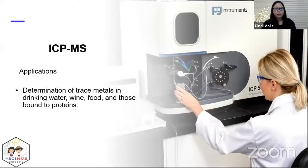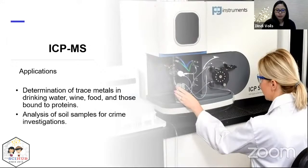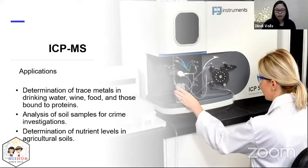ICP-MS can be used for the determination of trace metals in drinking water, wine, food, and down to proteins. It is also used for analysis of soil samples for crime investigations and determination of nutrient levels in agricultural soils.